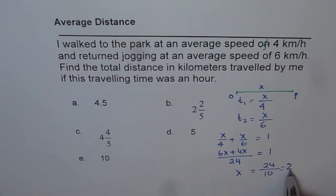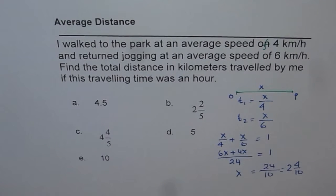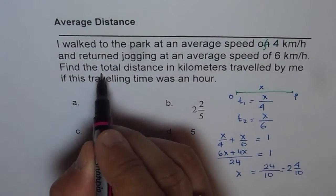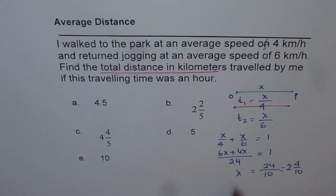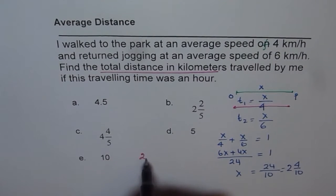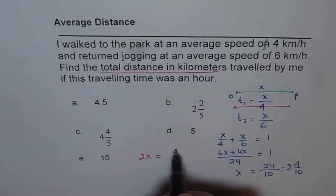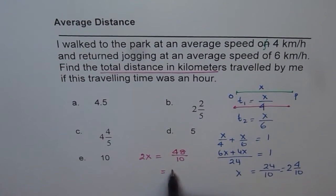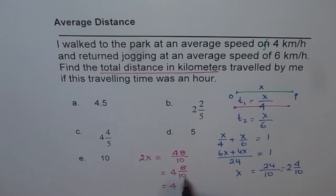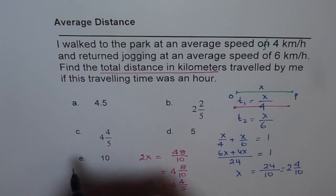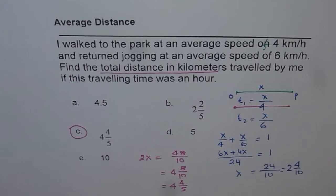That gives us an answer of 2.4 over 10, which is 2.4. Now remember the question asks for the total distance — find total distance — meaning going and returning both. That means 2 times x. So let us find what 2 times x is. Let me write here: 2 times x is equal to 48 over 10, which gives us 4.8 over 10. We can simplify by dividing both by 2, getting 4 over 5. So the answer is C.